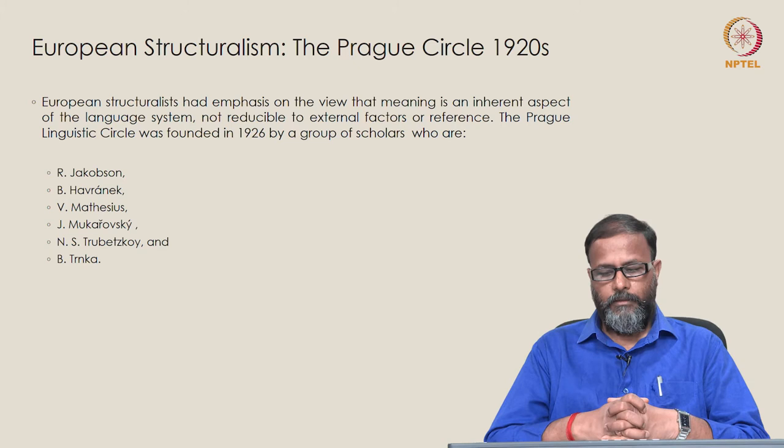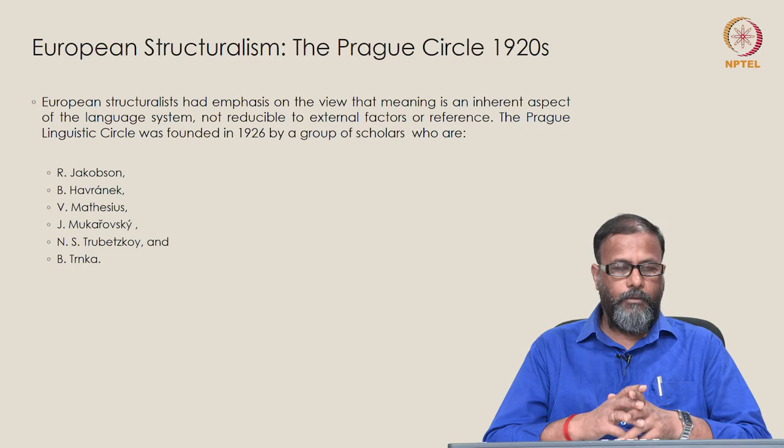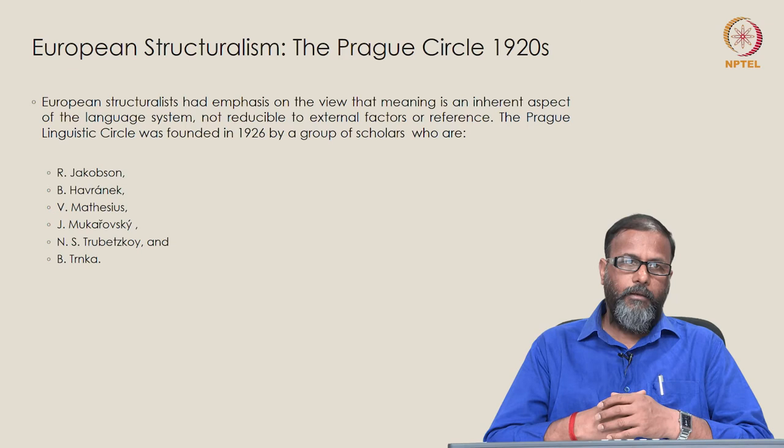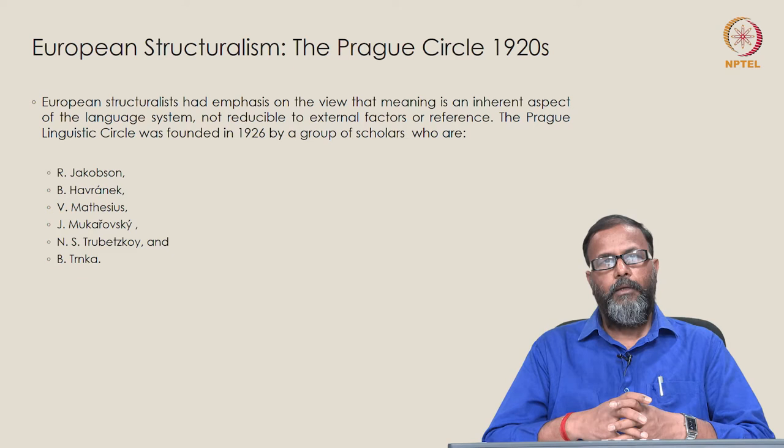The Prague Linguistic Circle was founded formally in 1926 by a group of scholars including Roman Jakobson, B. Havonek, V. Mathesius, J. Mukarovsky, N. S. Trubetzkoy, and B. Trnka. They were the founders of the Prague Circle. We all understand Roman Jakobson's contribution to phonology, genetic phonology, and other areas.